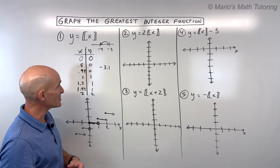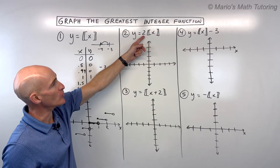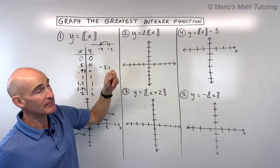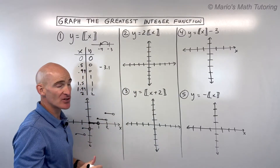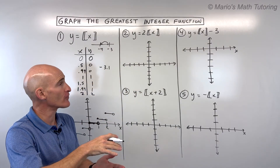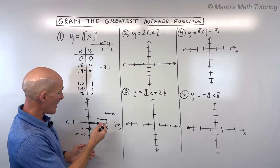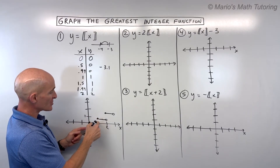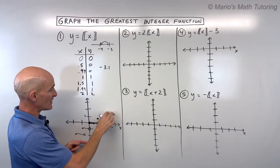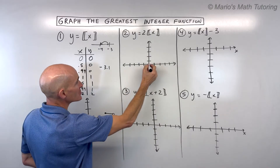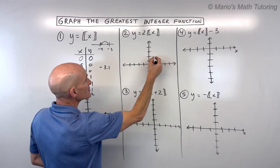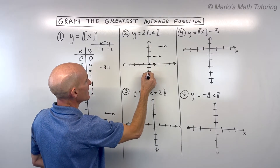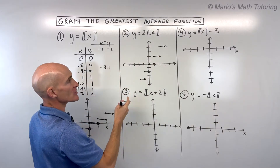Now talking about transformations — say you wanted to graph y equals 2 times the greatest integer of x. The 2 is not grouped with the x, it's in front, so it multiplies all the y values by 2. This is a vertical stretch by a factor of 2. Instead of jumping up to 1, the stair is now at 2; instead of this one being at 2, it's at 4. So it's stretching in the vertical direction — then to negative 2, negative 4, etc.